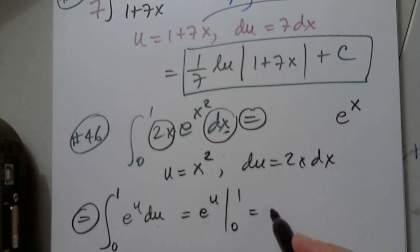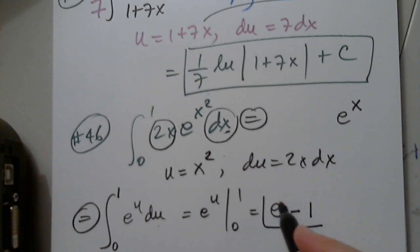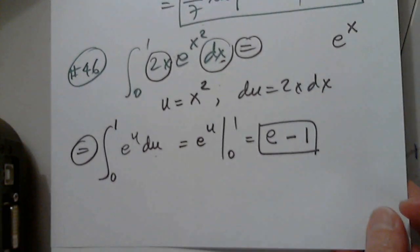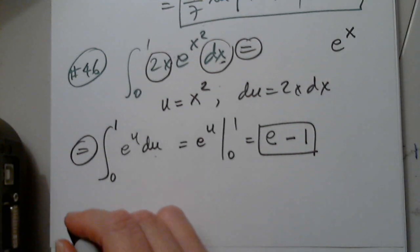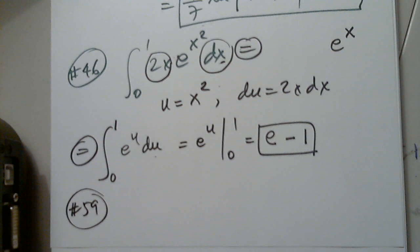So, this is e to u from 0 to 1. I plug in 1, I get e. Minus, when I plug in 0, I get 1. Any questions on this problem? Let me know, please.